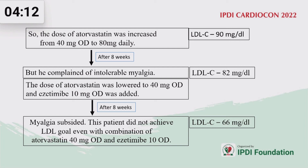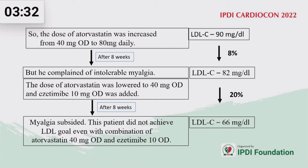Because LDL is at 66 mg/dL and we need to reach 55 or below, this is a practical scenario in clinical practice — where we cannot achieve the target level due to physician inertia, non-adherence on the part of the patient, or not using combination drug therapy. It is also notable that doubling the statin dose produced only an 8% reduction, which is expected — every doubling of statin dose reduces LDL by only about 6%. The addition of ezetimibe reduced LDL by about 20% on top of statin, and in our case the reduction was exactly 20%.